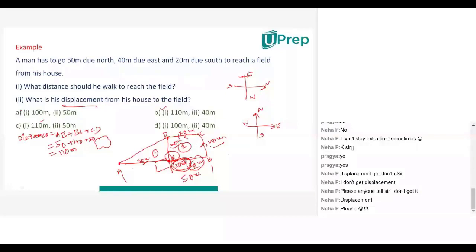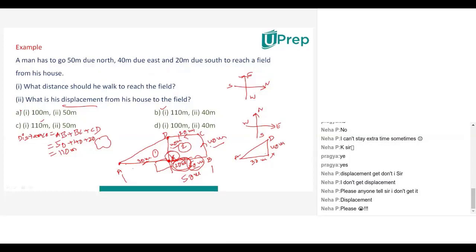Now observe carefully this particular triangle — A, D, X — with AX = 30 meters and DX = 40 meters. This is generally called a right-angled triangle. If any one of the angles is 90 degrees, it will be called a right-angled triangle.